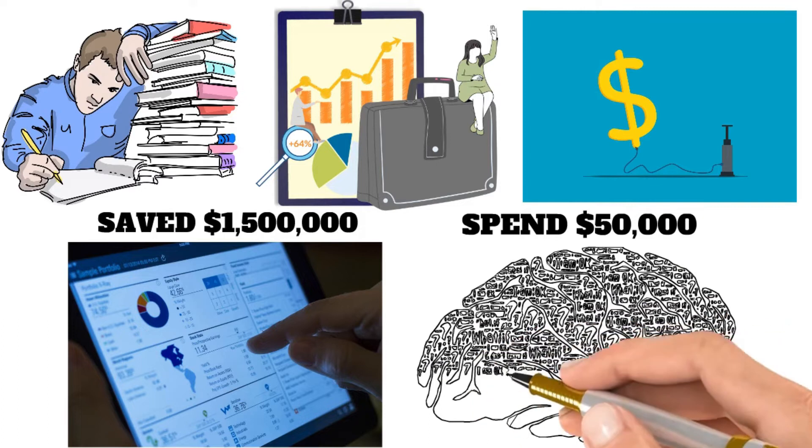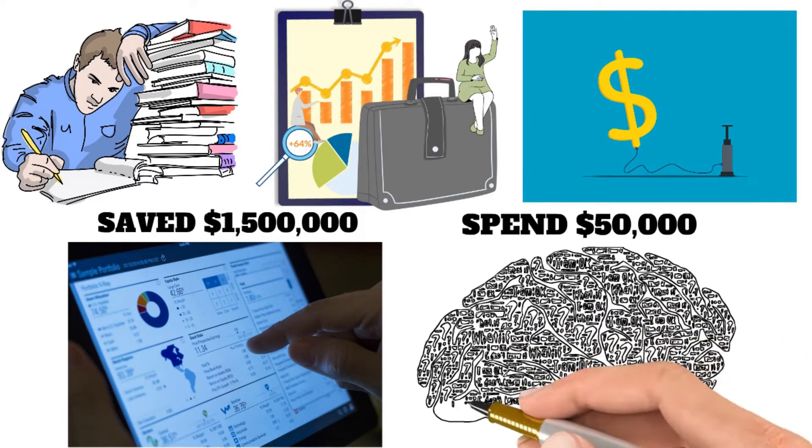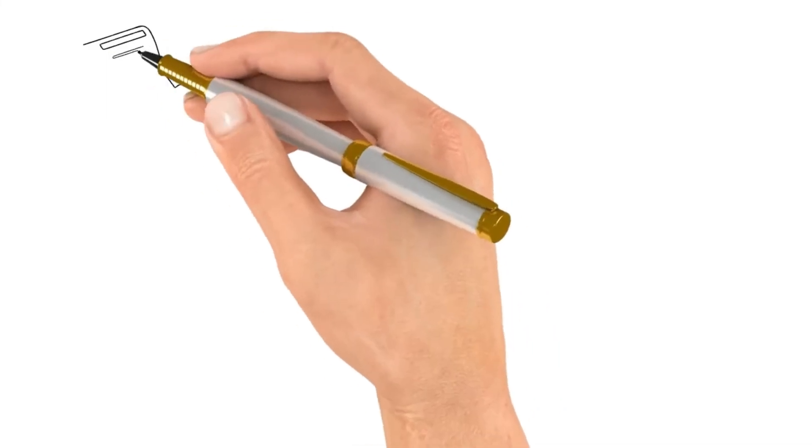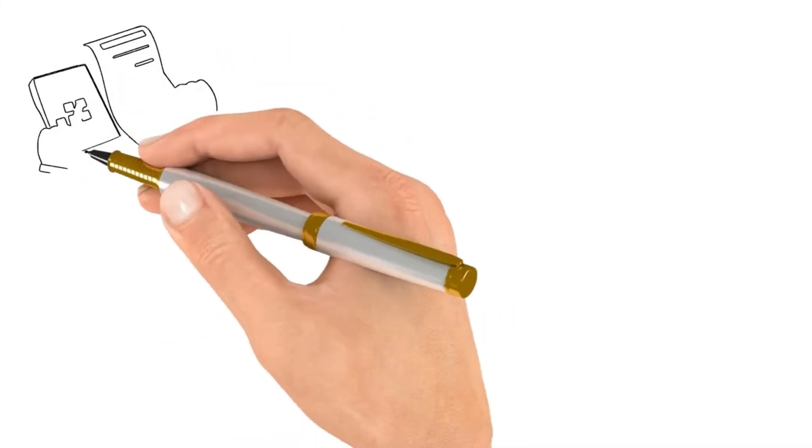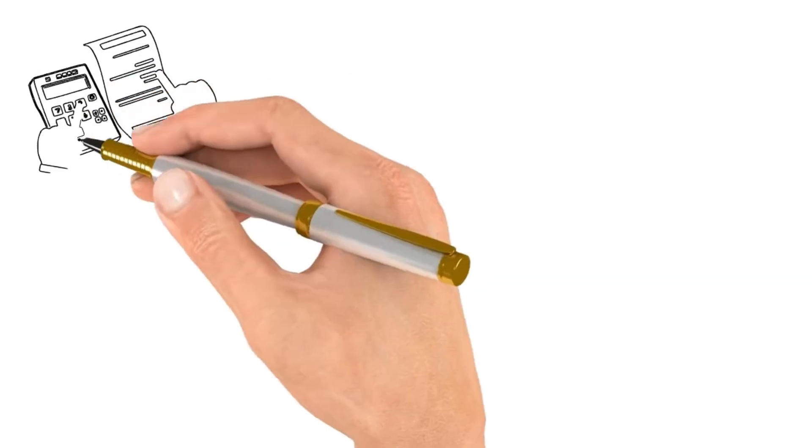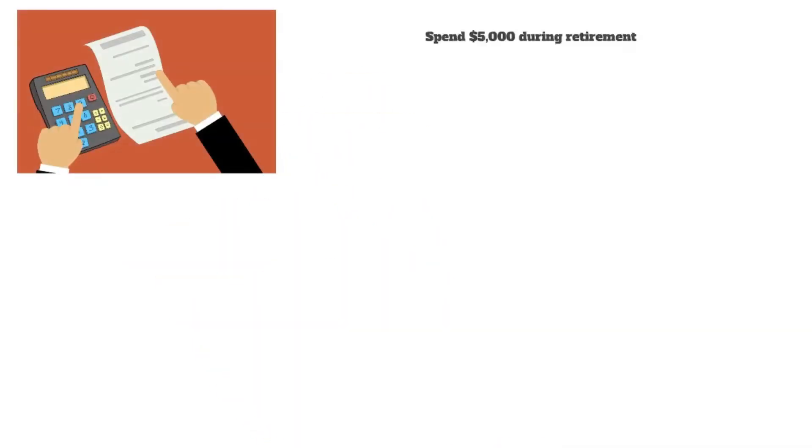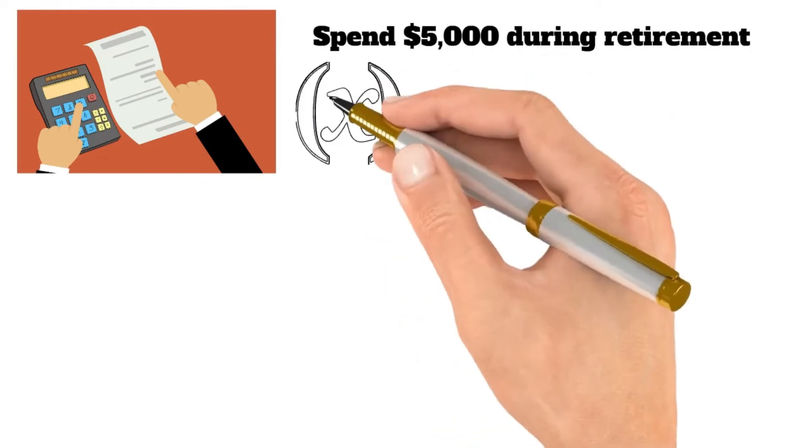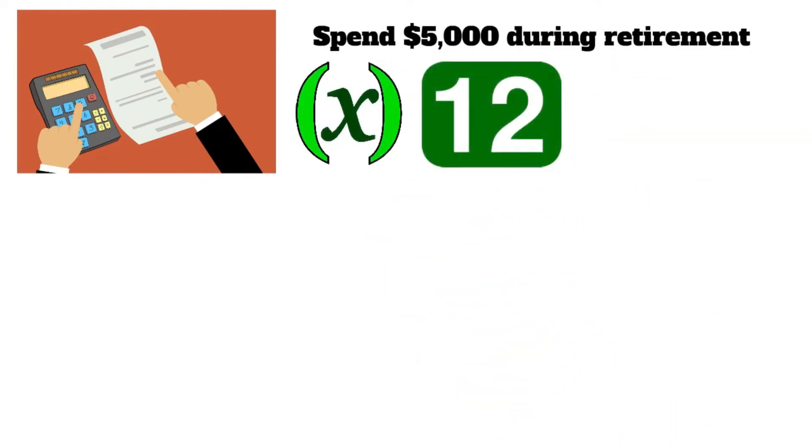This is a made-up example based on a hypothetical circumstance. In order to get an estimate of this kind, you will need to be familiar with the whole sum that you anticipate spending throughout your retirement. For instance, if you want to spend $5,000 during retirement, you would first need to multiply that amount by 12, and then you would need to divide that result by 4% of the total.